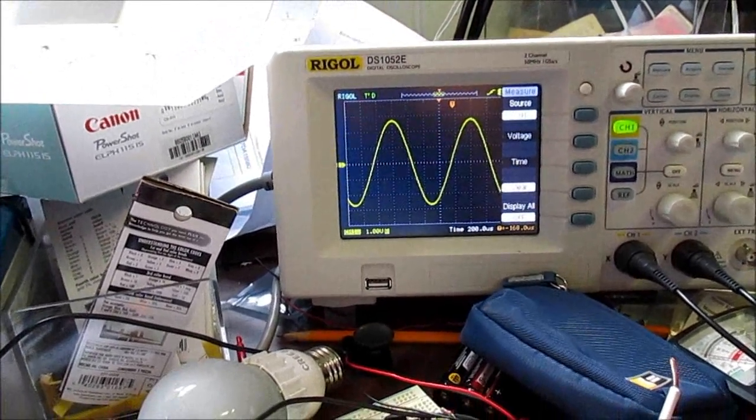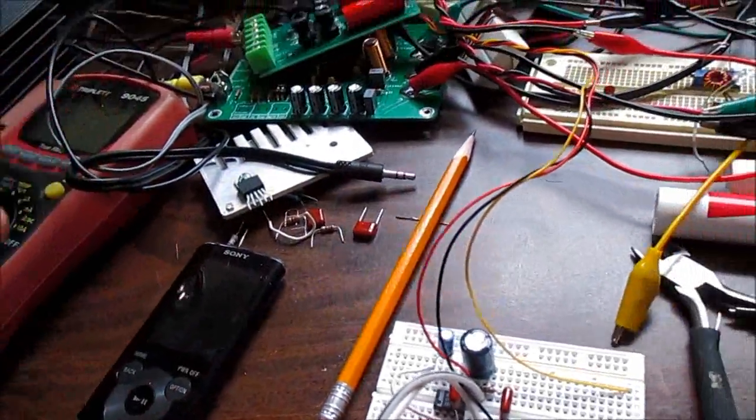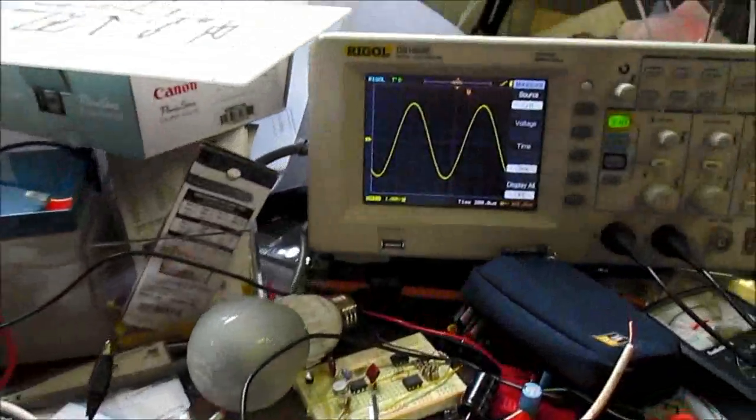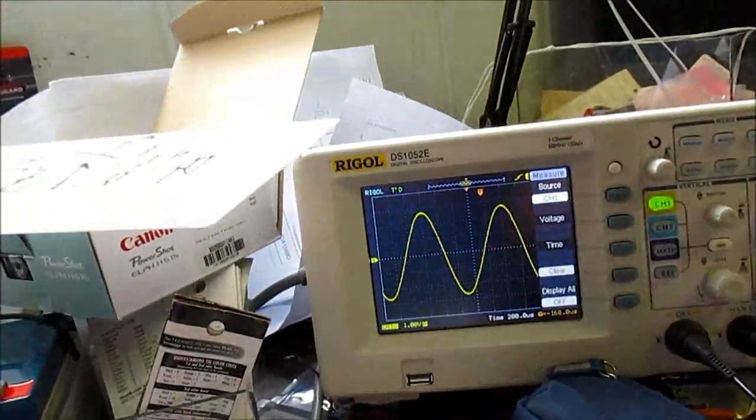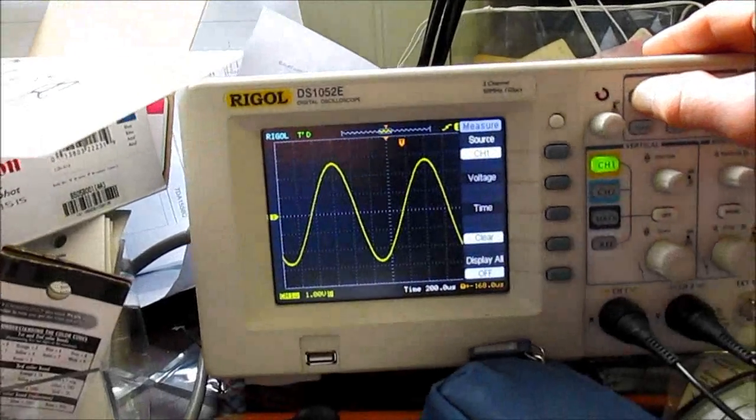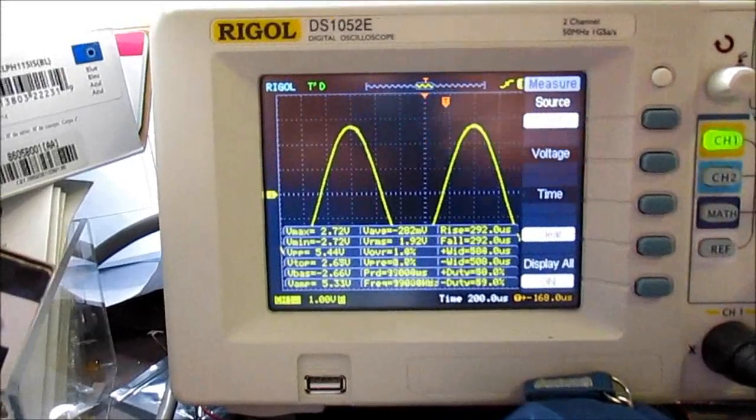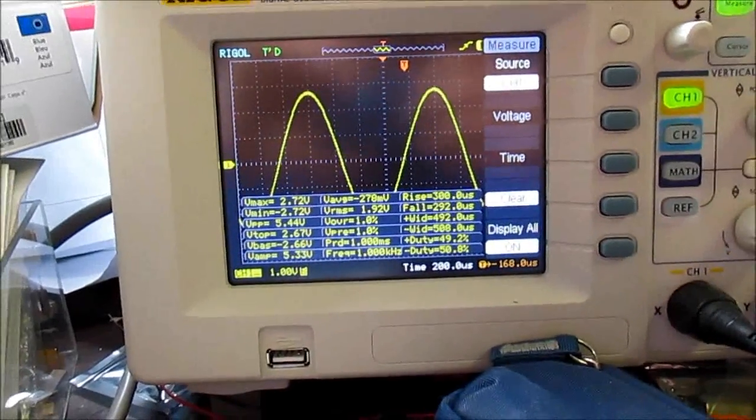Now you can see there's a fairly large step because the way the volume controls on these, they step in discrete levels. It'd be better if I didn't have to deal with that, like add a potentiometer or something, but for now this will work. So what are we getting here?